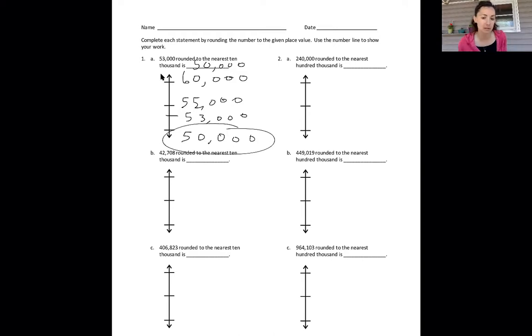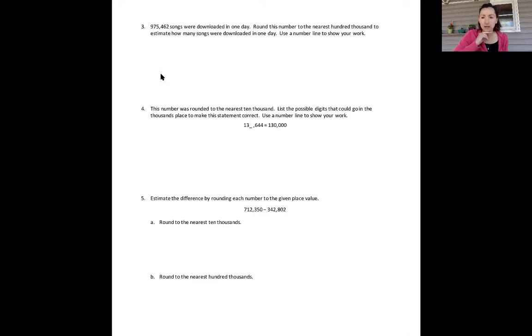Continue on these problems in the same manner. I noticed that on number 3, it also is the same process. It's looking at the number 975,462, and you're going to be rounding. Either it's going to be closest to 900,000, or what's one more hundred thousand? A million. Make sure you use your number line just the same and label those parts.